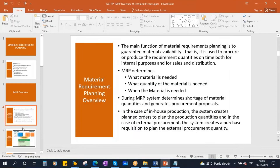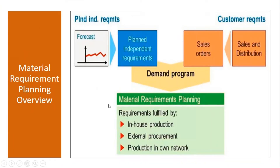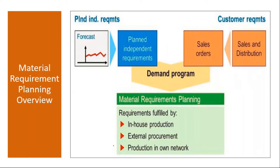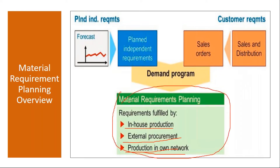If you see this slide, we are here. In the previous demand management, we had the forecast entered as planned independent requirements. And from the sales and distribution module, we get sales orders. These two are entered into demand management, and after that MRP is run. We already covered till that point. Now from here onwards, we will be concentrating on MRP — when you run MRP, it will try to fulfill in-house production requirements and also external procurement requirements. There are also some stock transfer cases.